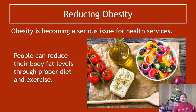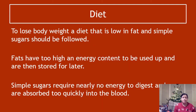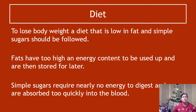You can reduce obesity by reducing your fat levels through proper diet and exercise. To lose body weight, a diet that is low in fat and simple sugars should be followed. Fats have a really high energy content and tend to be stored for later, which is why you should follow a low fat diet. Simple sugars require almost no energy to digest — they absorb very quickly into the bloodstream — and as a result you need to do more energetic activities to use them up. Exam questions may ask why a low fat diet should be followed or why simple sugars should be avoided, and these are the reasons you need to quote back.